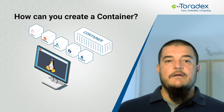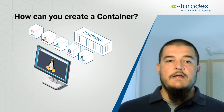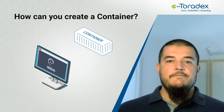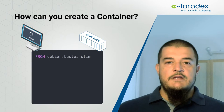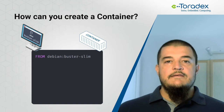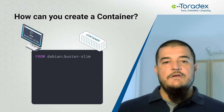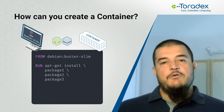Usually you start from an existing container. Many popular Linux distributions provide base container images. Here, as you can see from our FROM statement, we are using a Debian image. The 'slim' added to the name indicates that this is a trimmed-down image, useful to run containerized applications.